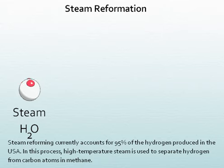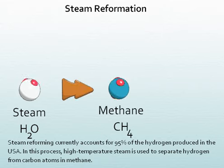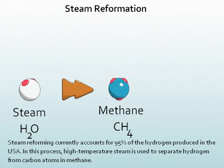Steam reforming currently accounts for 95% of the hydrogen produced in the USA. In this process, high-temperature steam is used to separate hydrogen from carbon atoms and methane.